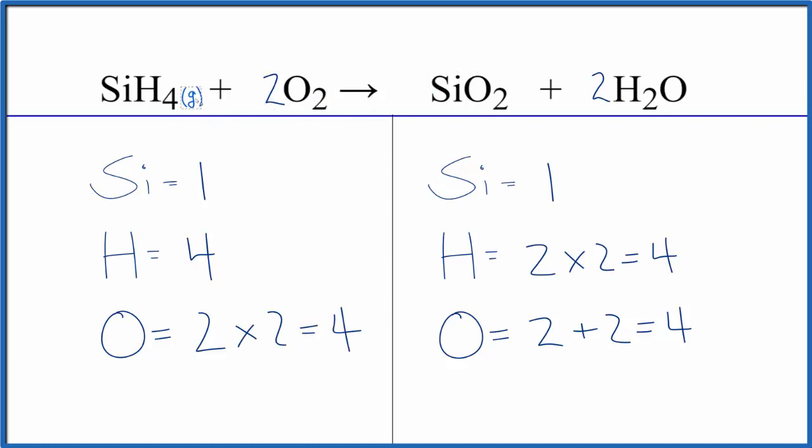If you were asked to write the states, the silicon tetrahydride would be a gas. Oxygen, we know that's a gas. Then we'd have solid silicon dioxide and water. It might be a liquid or a gas depending how hot the reaction got. Let's call it a liquid.